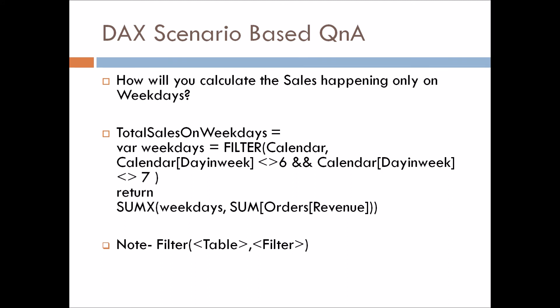The last question: how will you calculate sales happening only on weekdays? They may also ask about weekends, so prepare both. For weekdays, we use the FILTER and SUMX functions. We create a variable called 'Weekdays' which filters out days where the day of week is not equal to 6 and not equal to 7 — meaning we exclude Saturdays and Sundays. The FILTER function creates a table of those days.